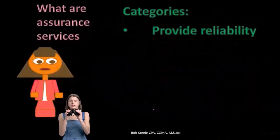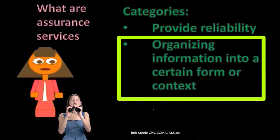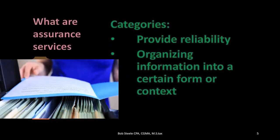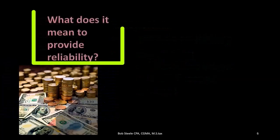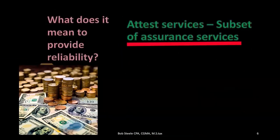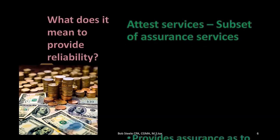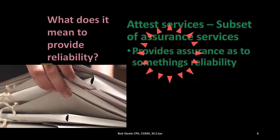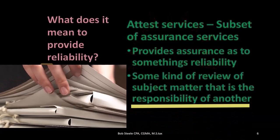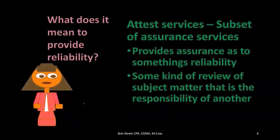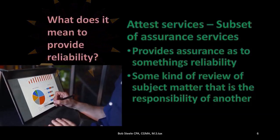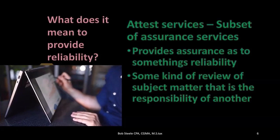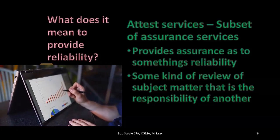What are assurance services? Categories could include providing reliability, or organizing information into a certain form or context. We're going to be focusing on the providing of reliability — that's the most common idea of assurance. Attest services are a subset of assurance services. We want to provide assurance as to something's reliability — usually financial statements. This is a review of subject matter that is the responsibility of another. The attestation engagement gives some type of reliability on the financial statements, which are the responsibility of another.